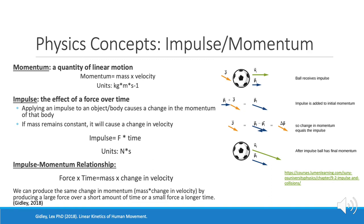The physics concepts of impulse and momentum are important here. Momentum is a quantity of linear motion, which is mass times velocity. Impulse is the effect of a force over time. Applying an impulse to an object or a body causes a change in momentum of that body, and if the mass remains constant, it causes a change in velocity. Impulse and momentum are related in that they are equal to each other: force times time equals mass times change in velocity.